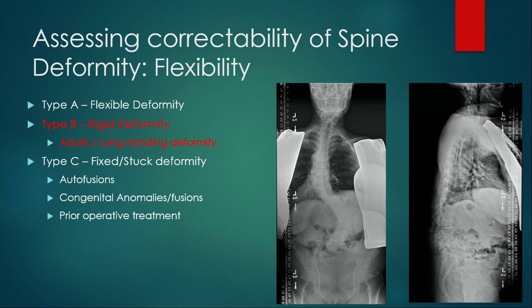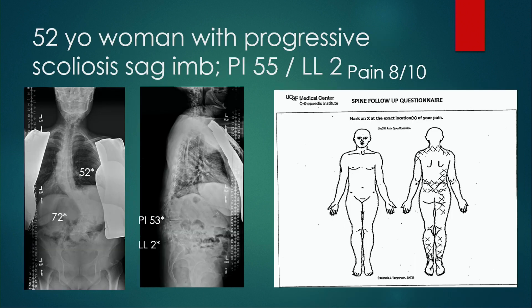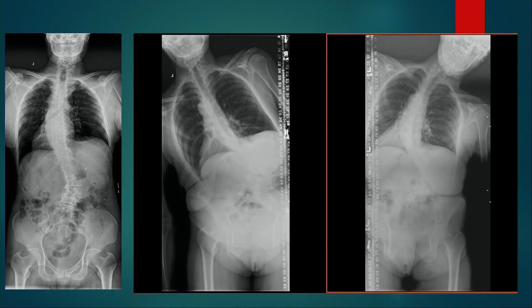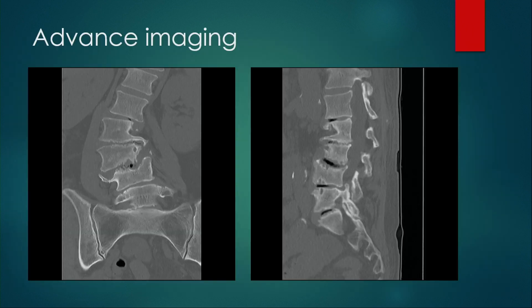Moving on to type B or rigid deformities — these are longer-standing adult deformities where the spine is not autofused but is stiff, and we have to do something in addition to facetectomies to get correction. A 52-year-old woman with progressive scoliosis and sagittal imbalance, PI-LL mismatch over 50, presenting with back and leg pain, had some flexibility on supine and bending films but a relatively rigid deformity. Advanced imaging demonstrated vacuum discs, which in our practice is an invitation for interbody work — an opportunity to gain correction and decompression using the interbody space.